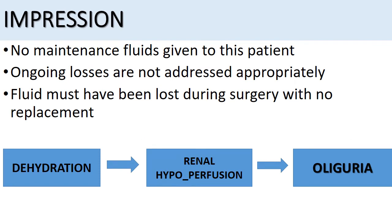Next is our clinical impression. No maintenance fluids are being given to this patient. This patient has undergone a laparotomy, which means the patient is NPO, and maintenance fluids should have been started. However, only 500 ml of isotonic saline was infused at the start of surgery and that has now finished. Besides that 500 ml, the patient has already lost 600 ml in his nasogastric tube just after surgery. The ongoing losses are not being addressed, and if there are any drains, those fluids are not accounted for either.